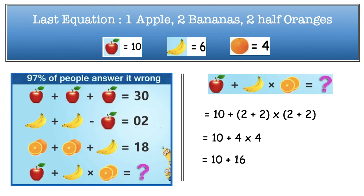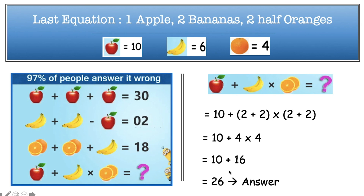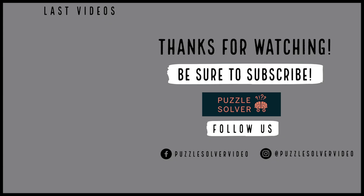Now we solve this equation using the BODMAS rule: first brackets, then orders, then multiplication, then addition, then subtraction. Opening the bracket: 2 plus 2 equals 4, so the equation becomes 10 plus 4 times 4. Multiplying first: 4 times 4 equals 16. Then adding: 10 plus 16 equals 26. So the answer is 26, and that's how we solved this puzzle.